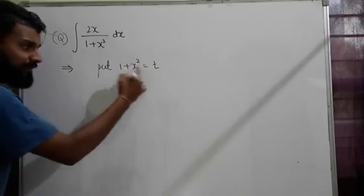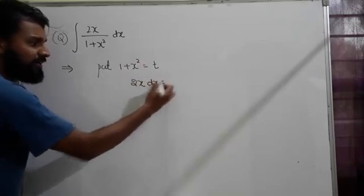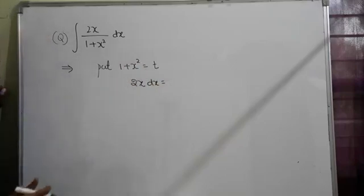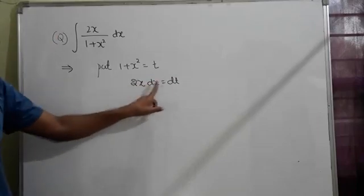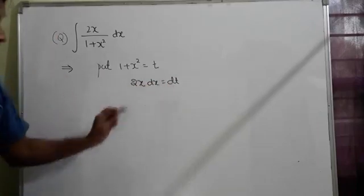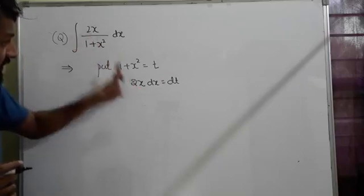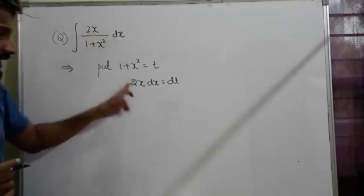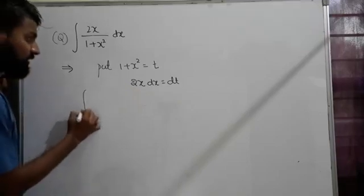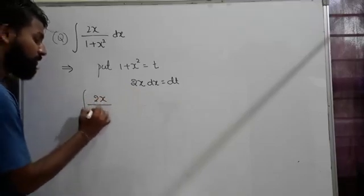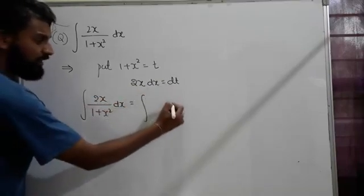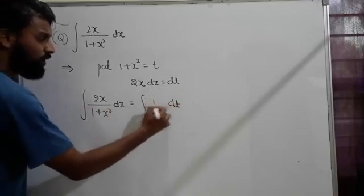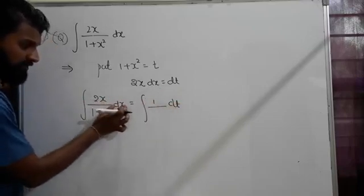x² gives 2x·dx = dt. So 2x·dx = dt. Here, 2x and dx are already there. So 2x·dx, in place of that I'll write dt. 1/(1 + x²), but 1 + x² is t. So 1/t·dt is the standard one.